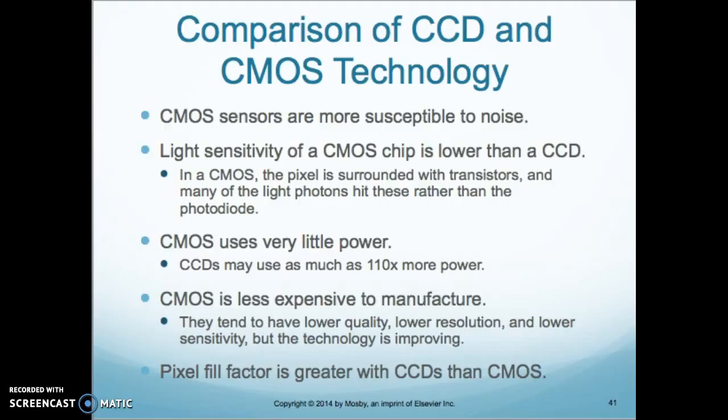CMOS sensors are the most susceptible to noise compared to CCDs. Light sensitivity of the CMOS chip is lower than the CCD. In a CMOS, the pixel is surrounded with transistors, and many of the light photons hit these rather than the photodiode. CMOS uses very little power, whereas CCDs may use as much as 110 times more power than the CMOS.